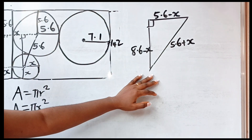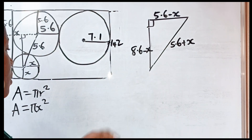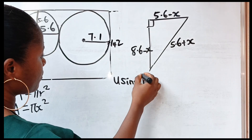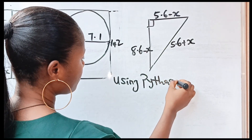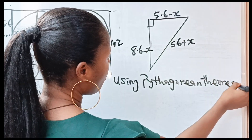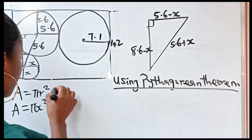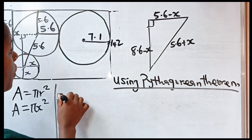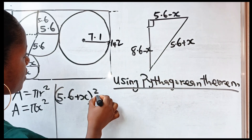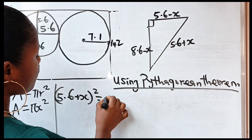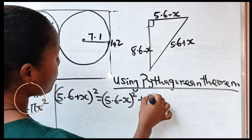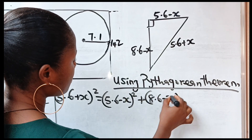This is what we have. Using the Pythagorean theorem, we have that (5.6 + x)² is equal to (5.6 − x)² plus (8.6 − x)².